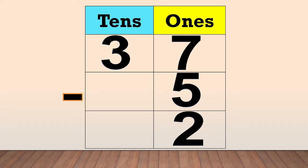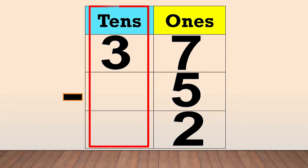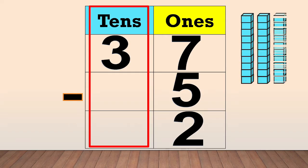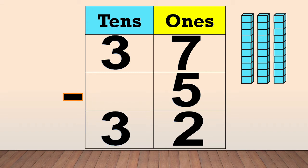Now, we subtract the tens. We have 3 tens — 1, 2, 3. But there is no number in the subtrahend in the tens column. That means there is nothing to subtract, so we bring down the 3 tens. Our final answer is 32. 37 minus 5 equals 32.